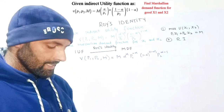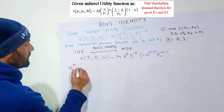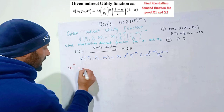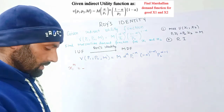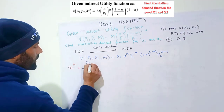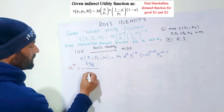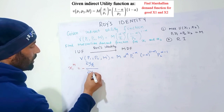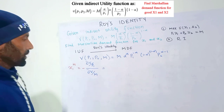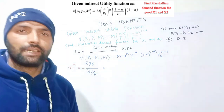Roy's identity says that to find the Marshallian demand function for good x1, we take the ratio: x1 = -(∂V/∂p1) / (∂V/∂m). That is, the negative of the partial derivative of the indirect utility function with respect to p1, divided by the partial derivative with respect to income m.